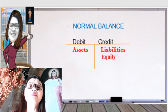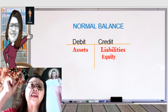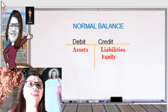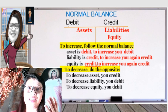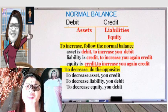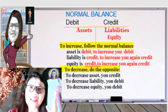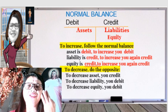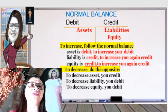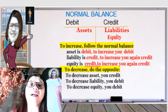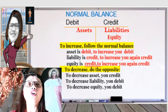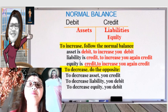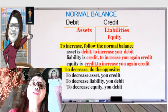What is a normal balance? The normal balance is an indicator of how we shall increase or decrease an account. So, showing you an illustration of the normal balance: the normal balance of asset is debit; the normal balance of liability is credit; the normal balance of equity is credit. To increase your asset accounts, you need to follow the normal balance — asset's normal balance is debit, so to increase it, you debit it.